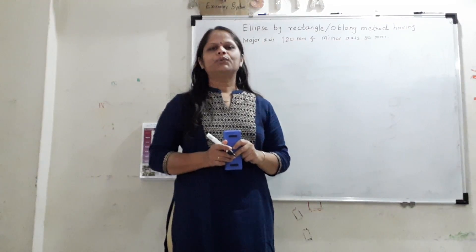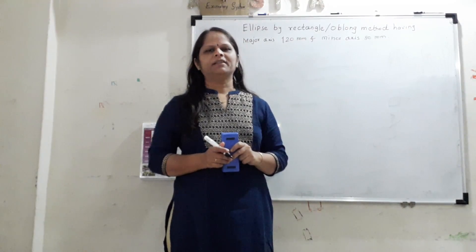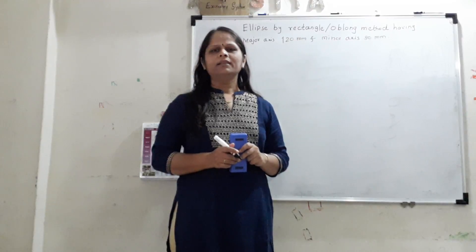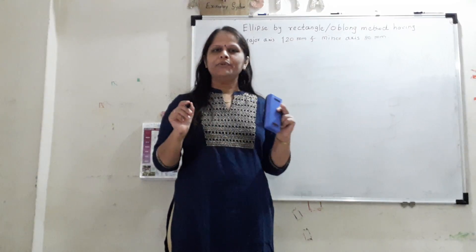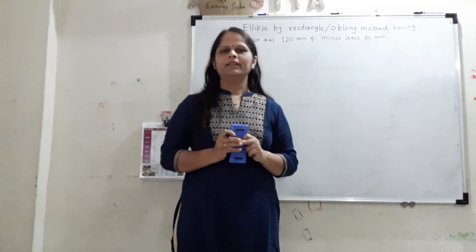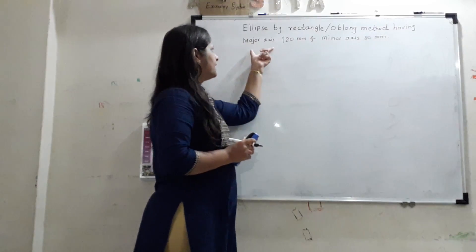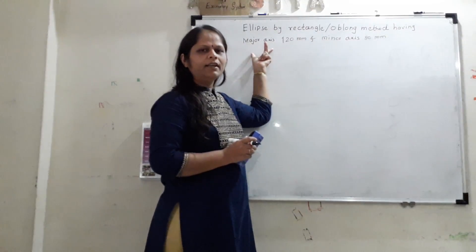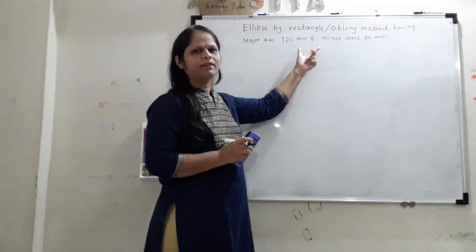Today we will learn how to draw an ellipse using rectangle method. In rectangle method, we have to create the rectangle using the major and minor axis of the ellipse. The major axis will become the length of rectangle and minor axis will become the height of rectangle.